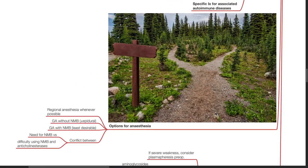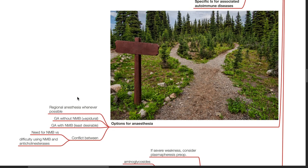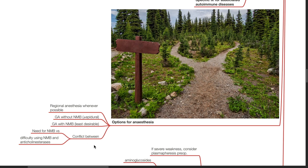Options for anesthesia. Regional anesthesia is preferred whenever possible. General anesthesia without neuromuscular blockade with or without epidural. General anesthesia with neuromuscular blockade is the least desirable. There's a conflict between the need for neuromuscular blockade versus difficulty using neuromuscular blockade and anticholinesterases.